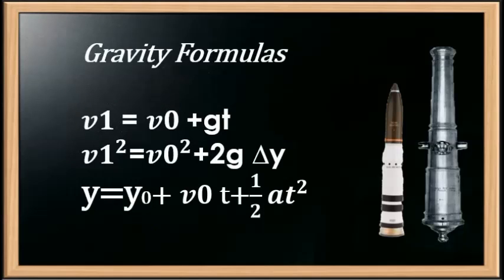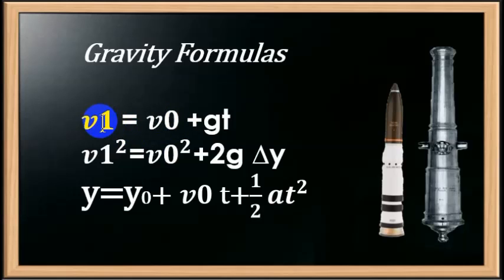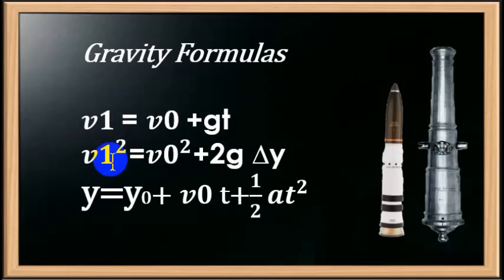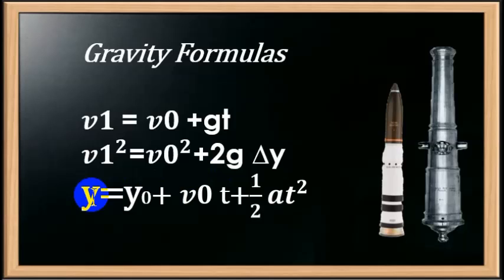We have three types of formulas I use for these problems — they are gravity problems. V0 is your initial velocity at the start, V1 is your final velocity, G is the force of gravity — 9.8 meters per second squared — and T represents time. One key formula is: final velocity squared equals initial velocity squared plus 2G times delta Y, where delta Y means change in height. Y is representative of height, and Y0 is our initial height.